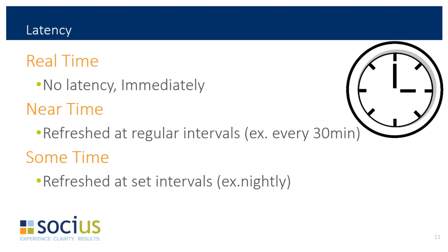The next category is latency, with three levels. First is real time — no latency at all. I generate the report and the data is up to date as of when I ran it. Next is near time, where data gets refreshed at a regular interval — maybe every 30 minutes or every two hours, typically less than a day. And then some time, which is a set interval where every night the data gets refreshed and the next day I've got a new set of data.